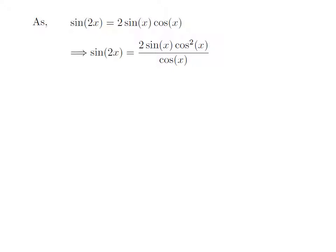So, the expression became sin(2x) is equal to 2 times sin(x) times cos²(x) divided by cos(x).